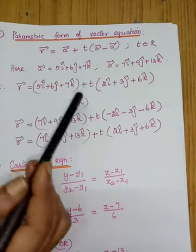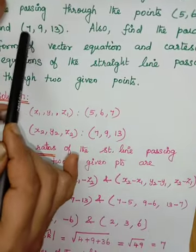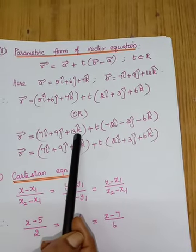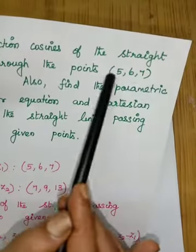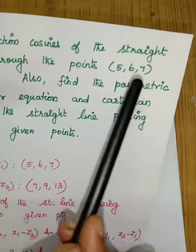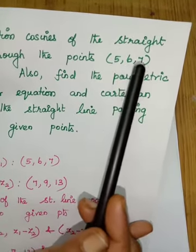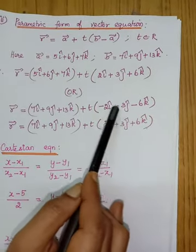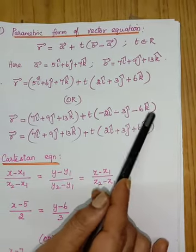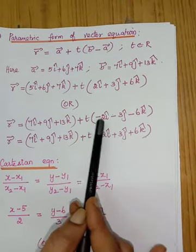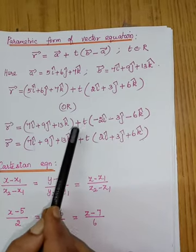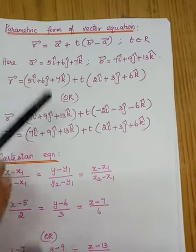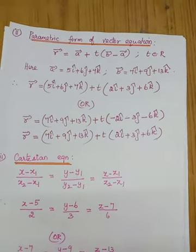Alternatively, if you take a vector as (7i + 9j + 13k) and b vector as (5i + 6j + 7k), then b minus a gives (minus 2i minus 3j minus 6k). Taking out the common factor of minus 1, the minus t becomes plus t. So either equation can be written — both are the parametric form of vector equation.